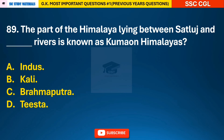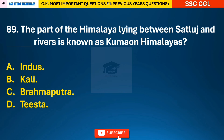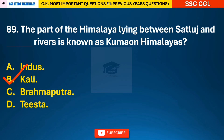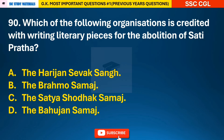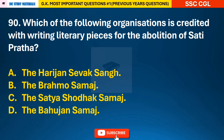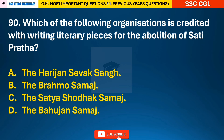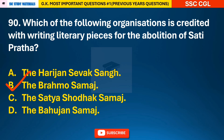Question 89: The part of the Himalaya lying between the Sutlej and Kali rivers is known as Kumaon Himalayas — answer B: it lies between the Sutlej and Kali rivers. Question 90: Which of the following organizations is credited with writing literary pieces for the abolition of Sati Pratha? — answer B: the Brahma Samaj.